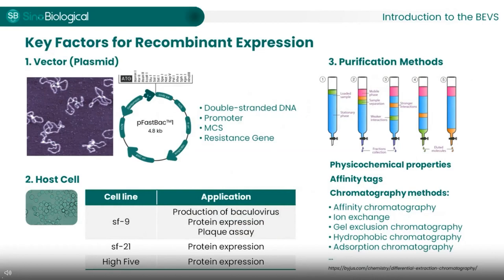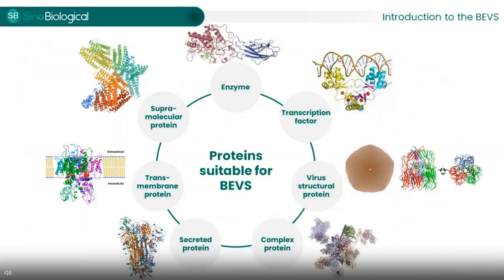There are several key factors in the whole process. The first is the Bacmid — it's so large that it's prone to accidental breakage, so you should be careful. The second factor is the selection of host cells; in some cases, different cells have different effects on the expression of the same protein. The chromatography method depends on the construct design and protein characteristics — please ensure it's appropriate for the target protein. The BEVS can be used to recombinantly express both secreted and intracellular proteins.